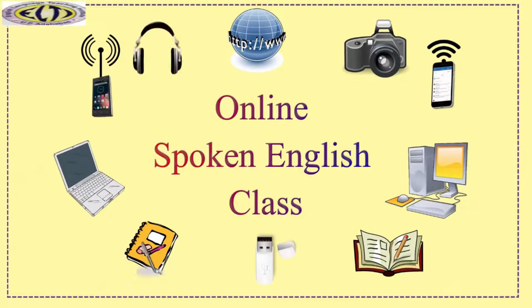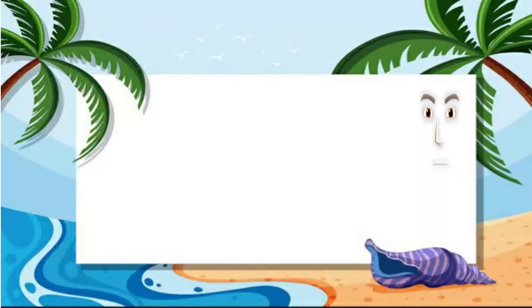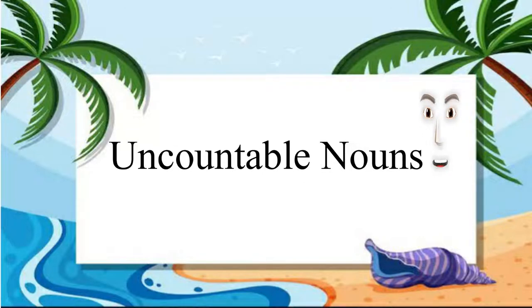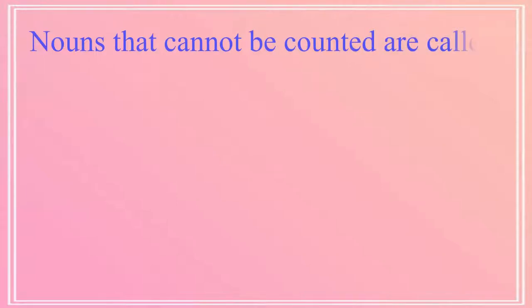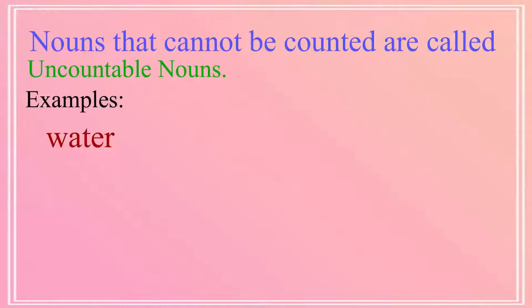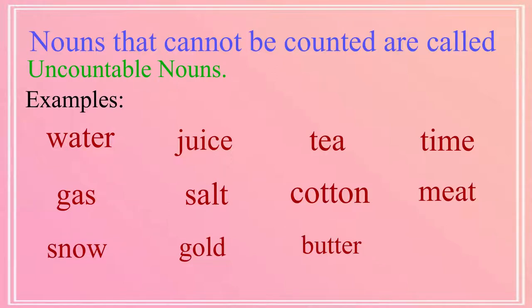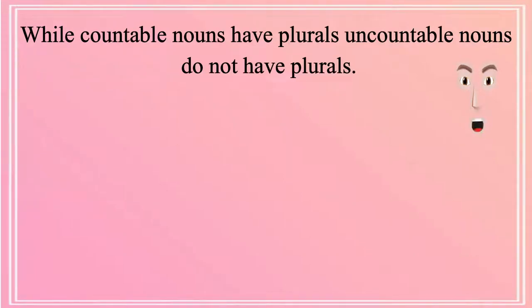Hello everyone and welcome back to online spoken English class. In the previous module we learned countable nouns, and in this module we will learn uncountable nouns. Nouns that cannot be counted are called uncountable nouns. Examples include water, juice, tea, time, gas, salt, cotton, meat, snow, gold, butter, information, wisdom, etc.